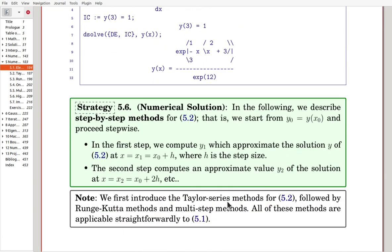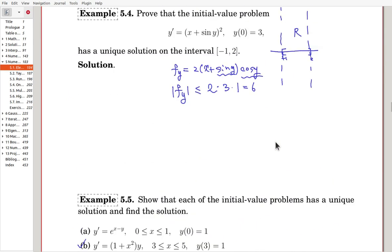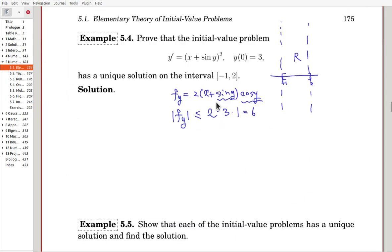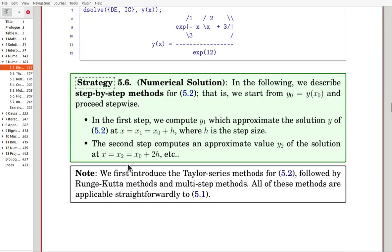Now, for the numerical solution, in the following, we'll describe step-by-step methods for the one variable equation. The equation of 5.2 is just this one, just one variable.